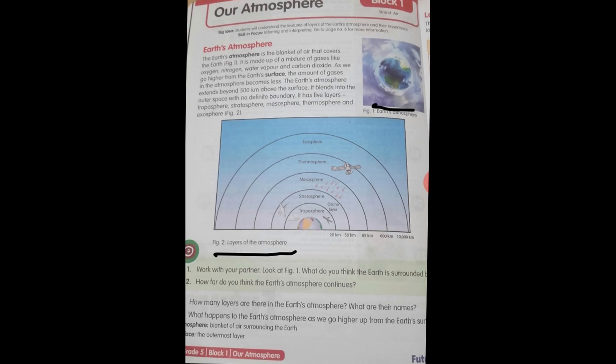The first layer is the troposphere. This is the very closest layer of atmosphere to the Earth. The weather changes here and we live in this layer. Aeroplanes also fly here.